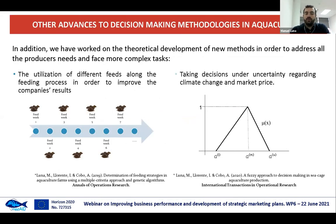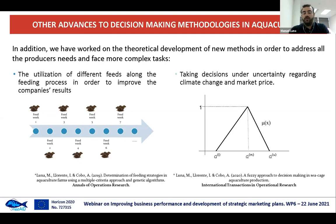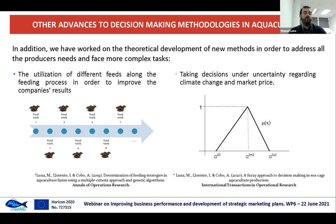Lastly, we have worked on theoretical development to improve other aspects of fish farming. On the left, we have a process to optimize feeding strategies using different feeds along the fattening process, and it found very good results — better than using only one feed during fattening. On the right, we have an example of managing uncertainty regarding aspects such as the evolution of water temperature or selling prices. This results in some of the most conservative strategies becoming more advisable, which changed our final recommendations somewhat.